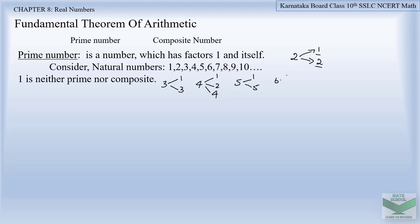Number 6 is divisible by 1, 2, 3, and itself, so it is a non-prime number. Number 7 is divisible by 1 and itself, so it is a prime number. Number 8 is divisible by 1, 2, 4, and 8 — those are all the factors of 8, so it is a non-prime number. Number 9 is divisible by 1, 3, and itself, so it is again a non-prime number.